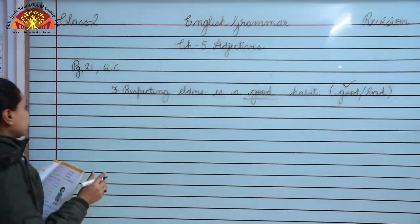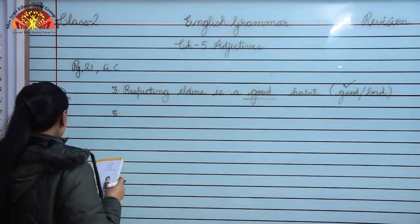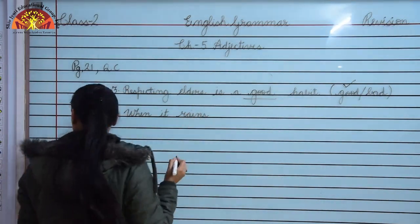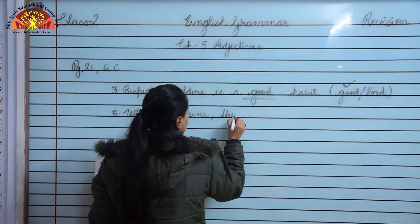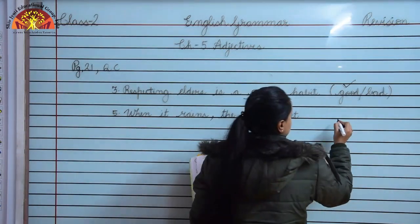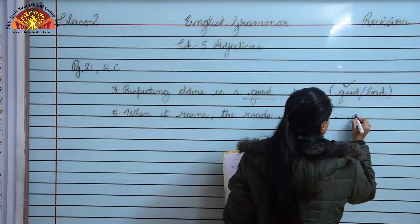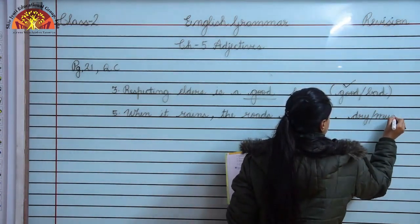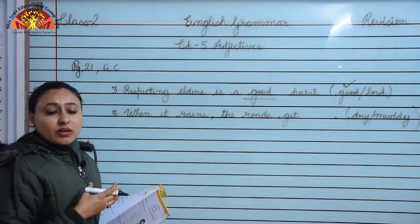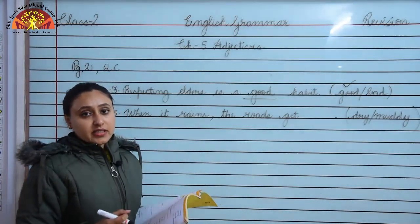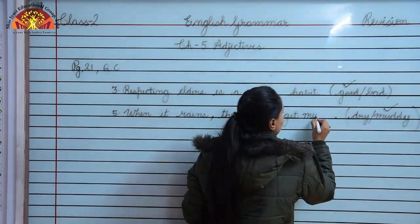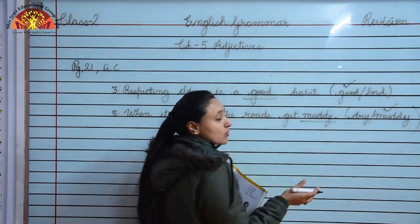Number 5: when it rains, the roads get dash. What is the condition of the road? The road becomes muddy. Roads become muddy due to water. So the correct adjective here is muddy - M-U-D-D-Y. When it rains, roads become muddy.